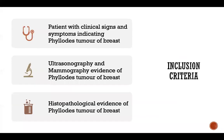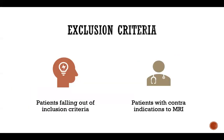Inclusion criteria include: patients with clinical signs and symptoms indicating phyllodes tumour of breast; ultrasonography and mammography evidence of phyllodes tumour of breast; and histopathological evidence of phyllodes tumour of breast. Exclusion criteria are patients falling outside the inclusion criteria and patients with contraindications to MRI.